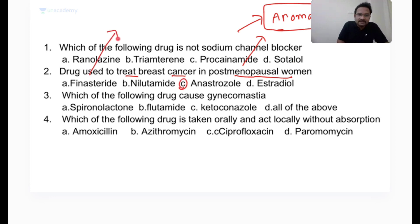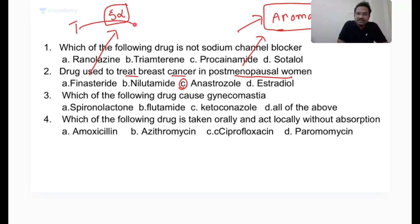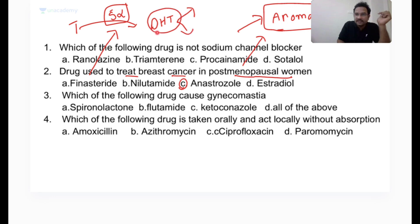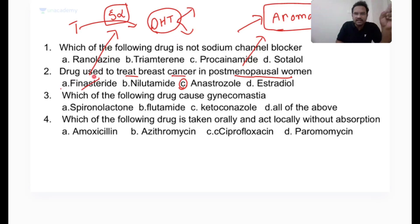Finasteride inhibits the 5-alpha reductase enzyme, which converts testosterone to dihydrotestosterone (DHT). DHT causes male pattern baldness and prostate gland enlargement. So finasteride and dutasteride are used to treat prostate enlargement or prostate cancer.